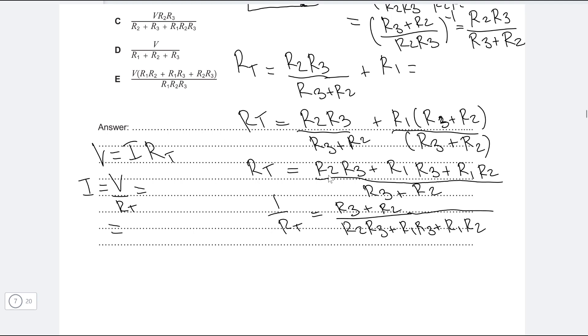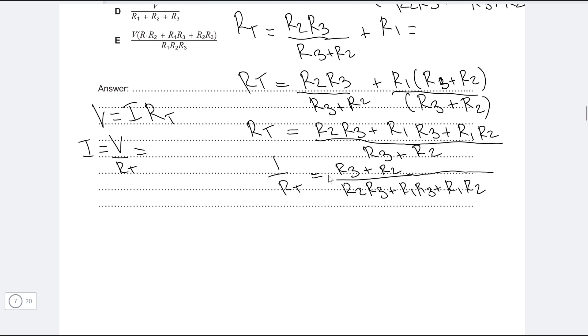Now all we need to do really is just copy this down here. So this will be equal to, should we just write it down underneath here with the square of space. So the current I will be equal to the potential difference V multiplied by R3 plus R2. Let's put some brackets because we're multiplying. We don't want to confuse the order of the operations divided by R2 R3 plus R1 R3 plus R1 R2.